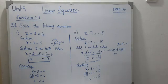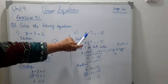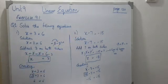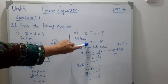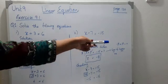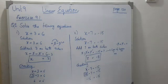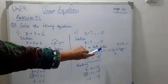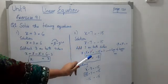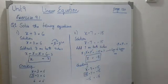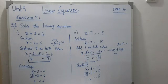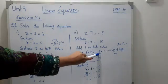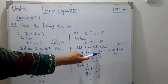Second example: x minus 7 equals minus 15. We change the operation — minus 7, so the opposite is plus 7. We add 7 on both sides. Then minus 15 plus 7: the sign of the bigger number applies — bigger number is 15, sign is minus, so the answer is minus 8.